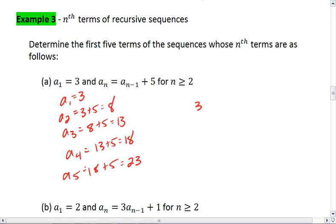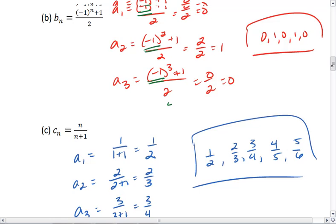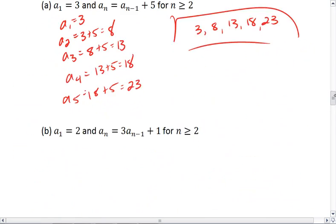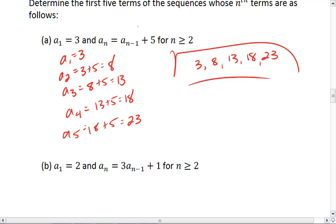Thus I have 3, 8, 13, 18, 23. Hopefully you notice that this is the same exact five terms that we saw in example 2a, even though 2a was defined as 5n minus 2. This tells you that for some sequences there are multiple ways to define it. I can define it with an explicit formula or I can define it with a recursive formula, as we see here.